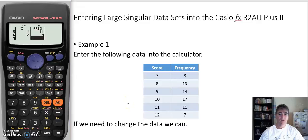So what if we need to change the data? Well, if this score here was actually meant to be a 13, I can come across to that, change that to a 13, press equals. But we know that that's not so, so let's go back and put the right one back in.